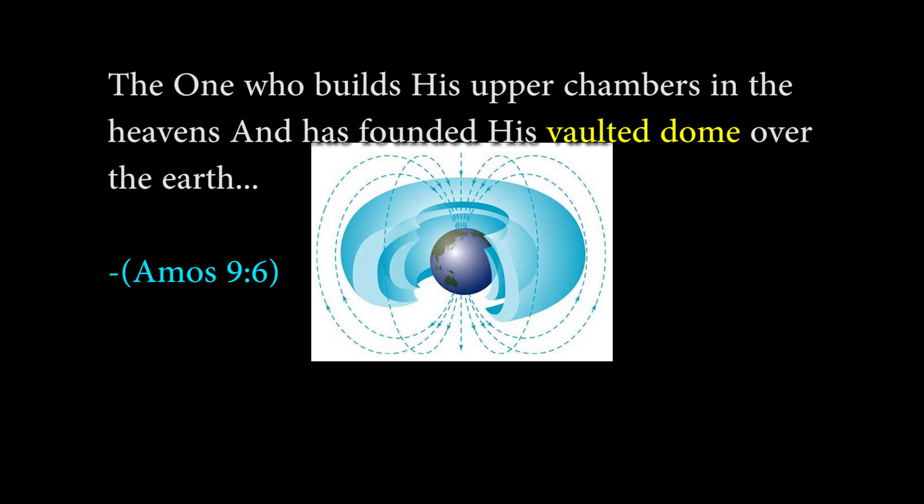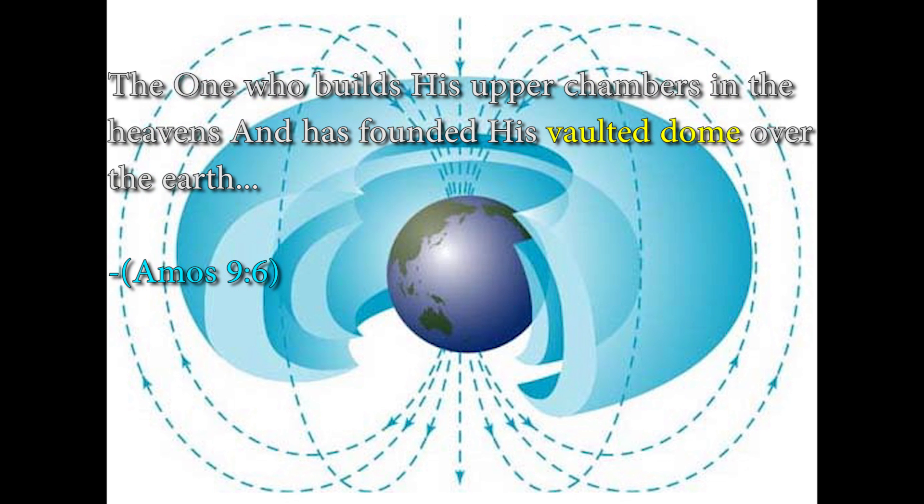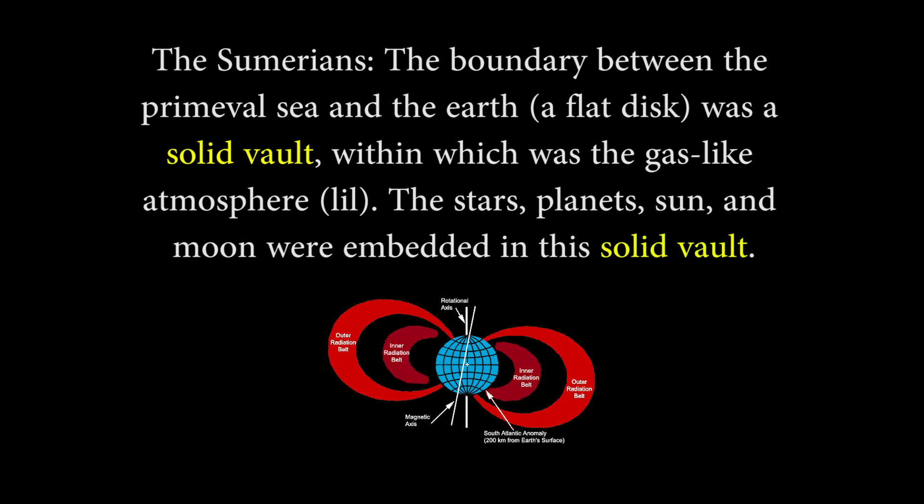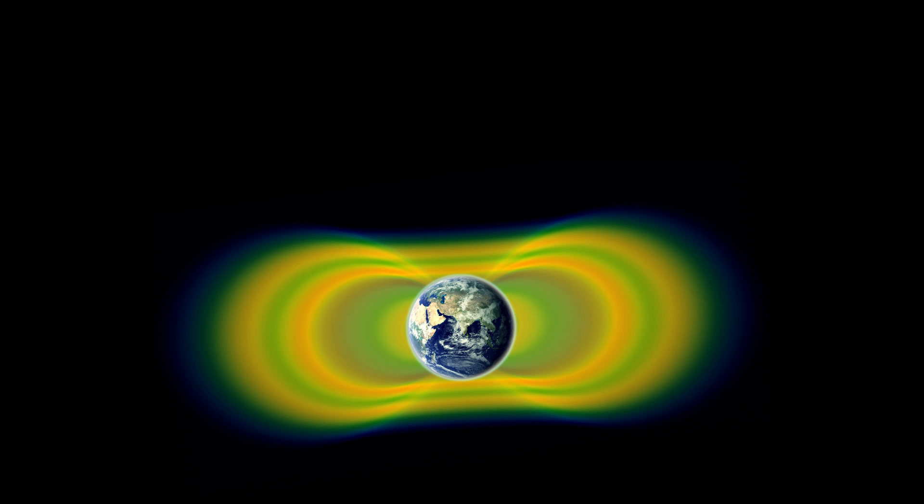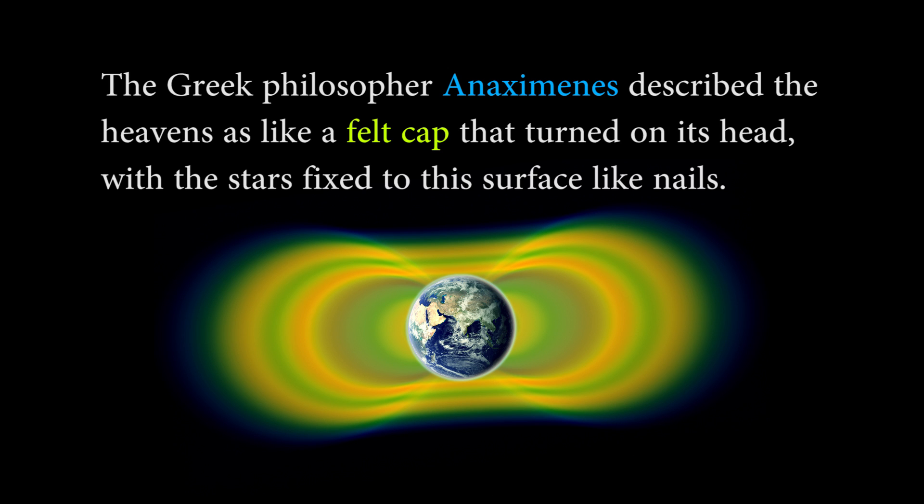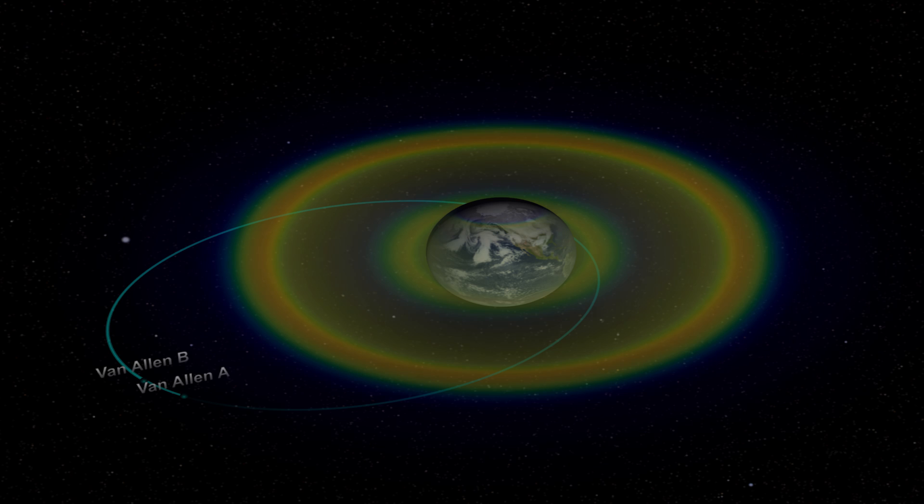Now I'm going to go through a couple more images that attempt to show what the Van Allen belt is. There's two of them, an inner belt and an outer belt. And I will show you a better diagram here. Here's another reference to a vaulted dome from an ancient writer. The Sumerians called it a solid vault as you can see here.